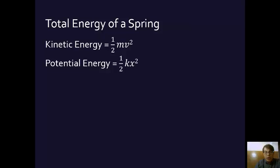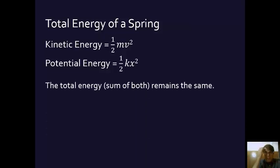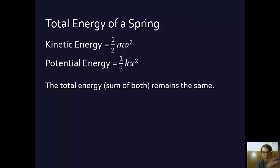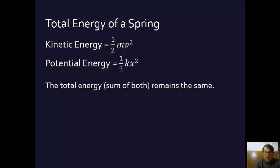Since the total energy of something in simple harmonic motion is basically the sum of the kinetic and potential energy — now we're assuming a theoretical situation here, one that doesn't actually exist in reality but we can approximate it. We're assuming there's no friction, and that this spring will go on forever back and forth. That's not true, but it's close enough of an approximation that we can say the total energy of this simple harmonic motion system is simply the sum of kinetic energy plus potential energy.